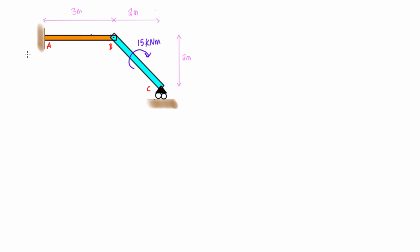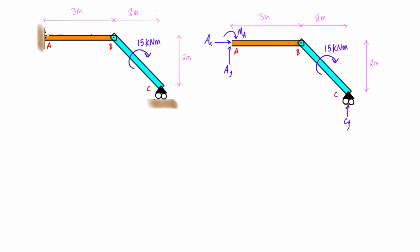So we're looking for the reaction forces at A and C, and you'll notice that C is a roller and A is a fixed end support. So here we have the free body diagram for the whole structure. You'll notice because of this fixed end here, we actually do get a moment here as part of that reaction. And at C, because of this roller, we don't actually get any horizontal reactions, purely a vertical reaction that is normal to that surface that the roller is sitting on.